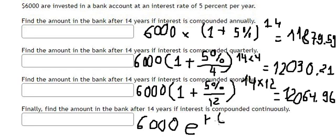multiplied by E to the power of R times T. R is the interest rate, T is the time. So R here is 5%, multiplied by the time of